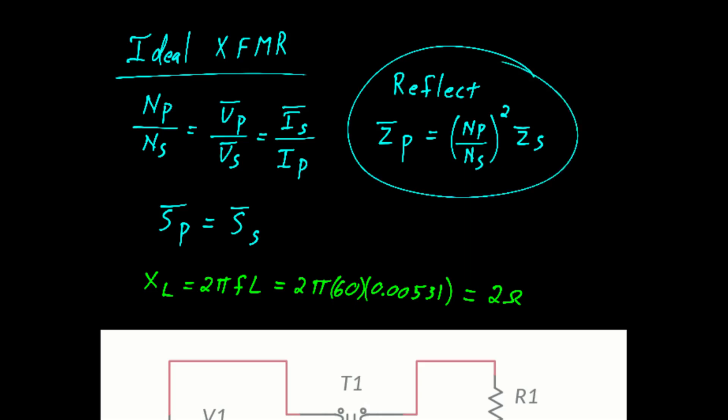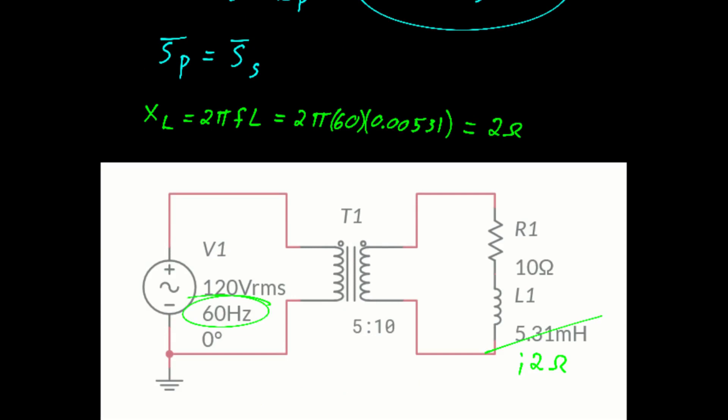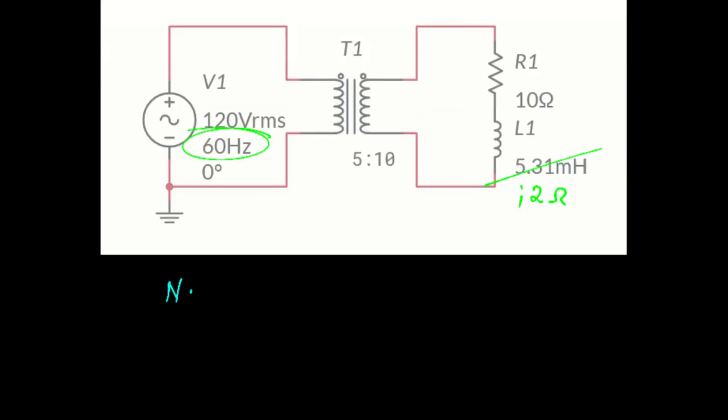To get this problem started, let's calculate the voltage on the secondary winding. Now the turns ratio is 5 to 10. If that follows through, we see this is a step up transformer and the voltage on the secondary will be 240 volts.